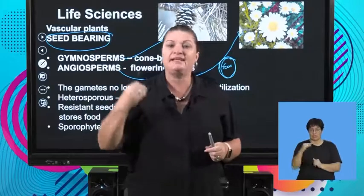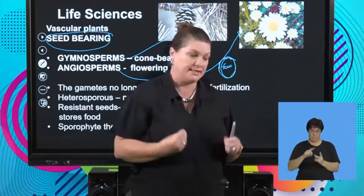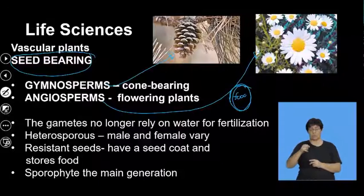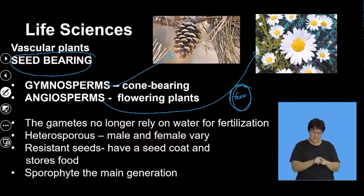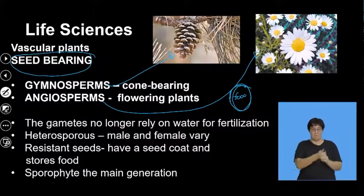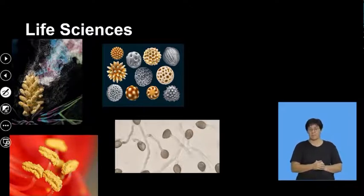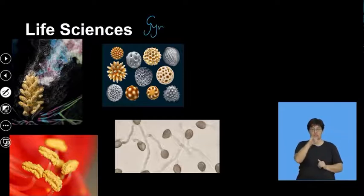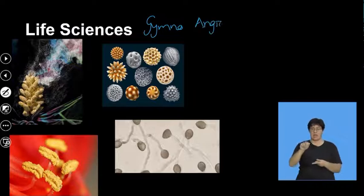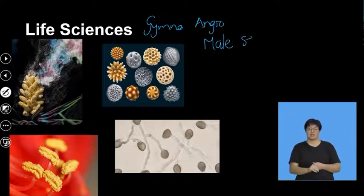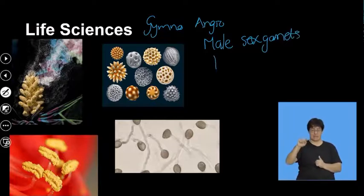Both gymnosperms and angiosperms produce a seed. Also, like the fern, their sporophyte generation is going to be the major generation. When I talk about gymnosperms and angiosperms, they are going to have a male sex cell — a gamete — and you know that term as pollen.